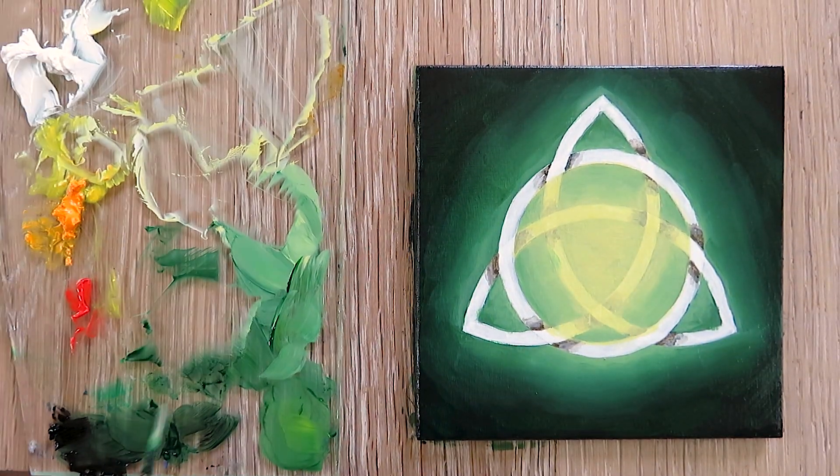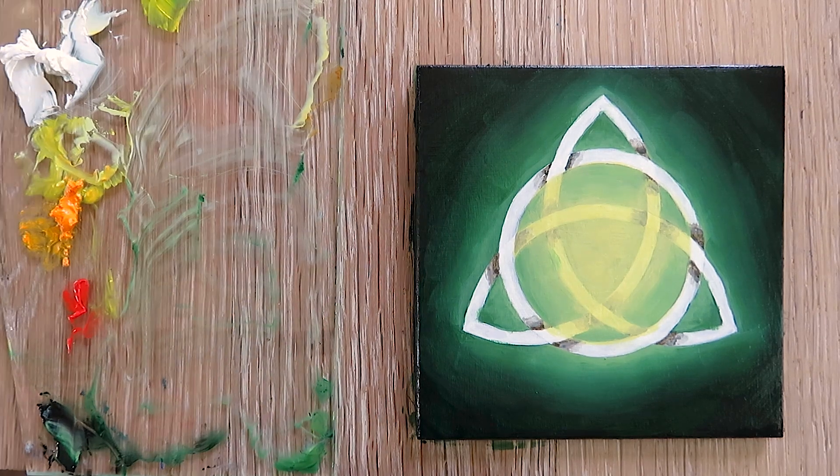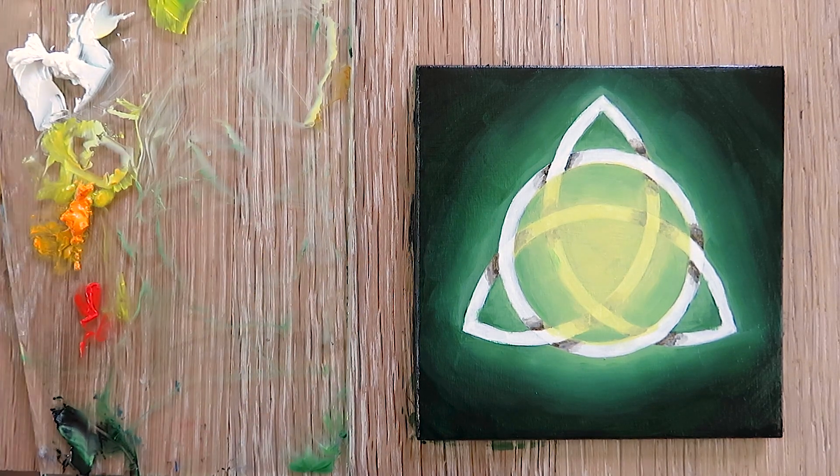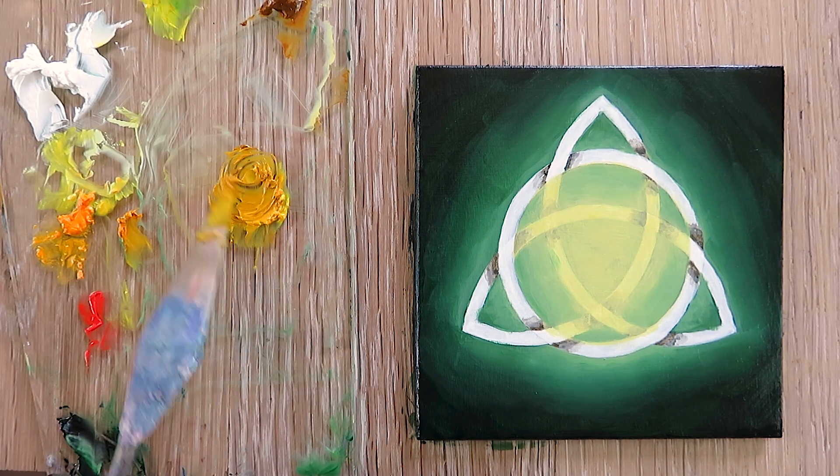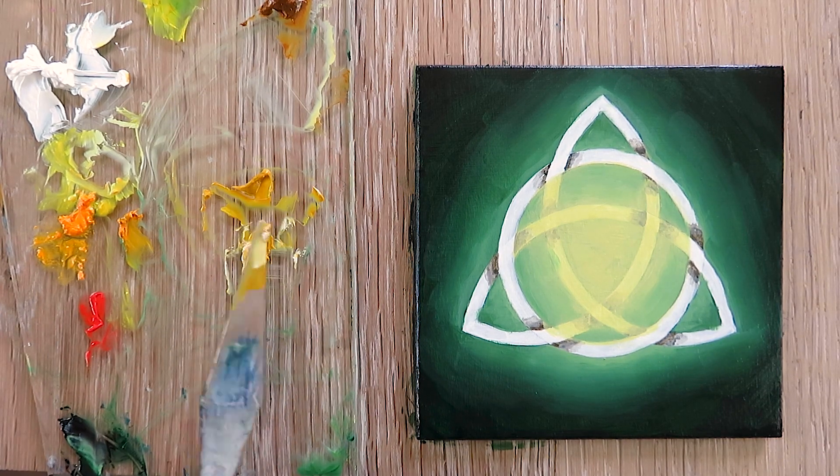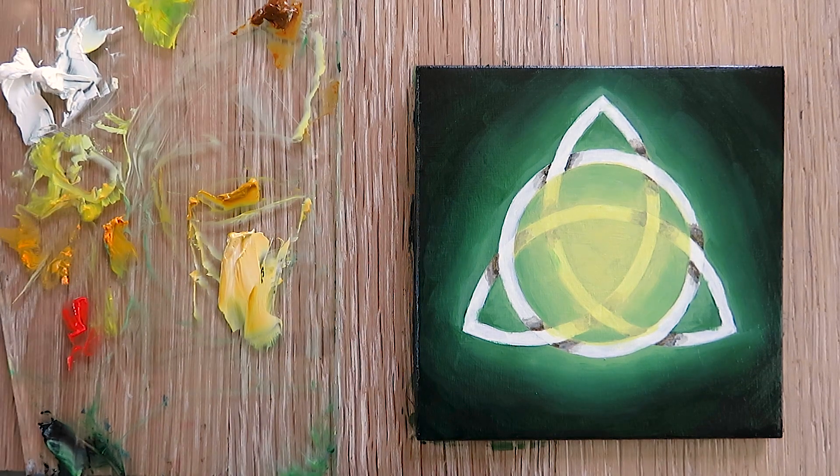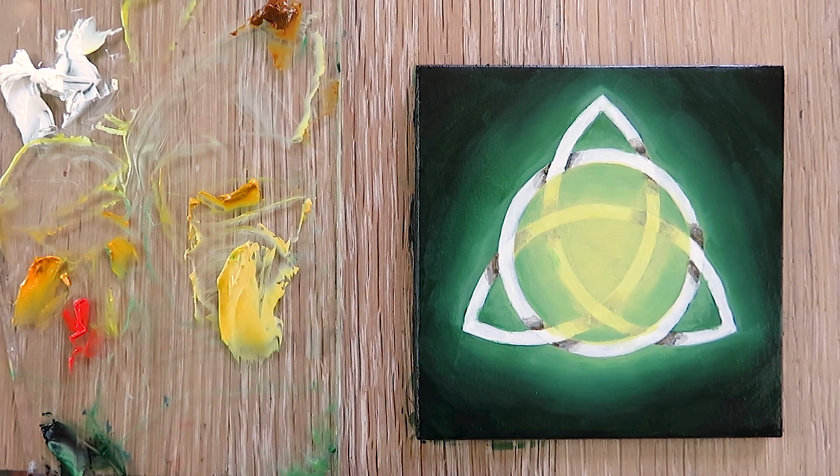For the triquetra we mix a golden-like color. For that we use cadmium yellow pale hue as well as raw sienna, and we adjust different hues with black and white. We mix three different shades in total. Let's start with the mid-tone—for that we use the same amount of raw sienna as well as cadmium yellow pale hue.